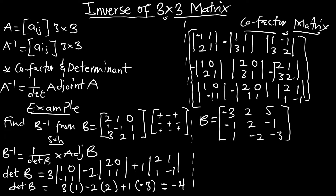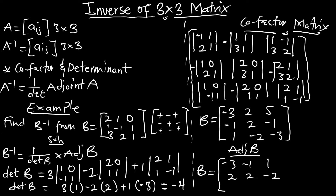Now that we have the cofactor matrix, we transpose this matrix in order to get the adjoint of matrix B. The adjoint of B is going to be the transpose of the cofactor matrix of B. If you transpose it, you are going to get the matrix: -3, -1, 1 and 2, 2, -2 and 5, -1, -3.